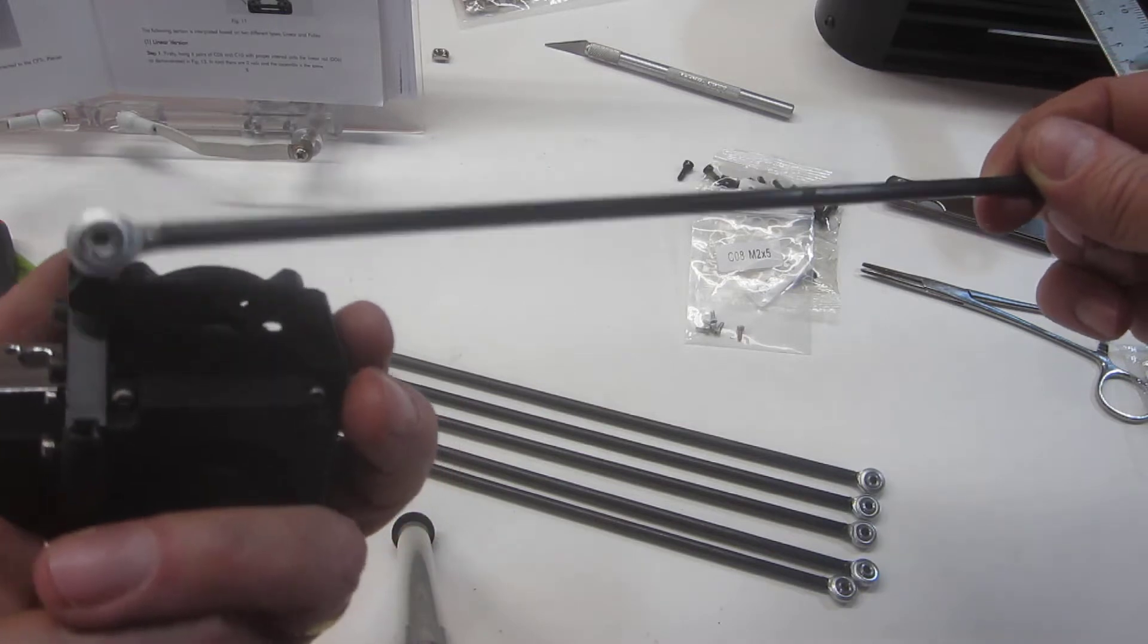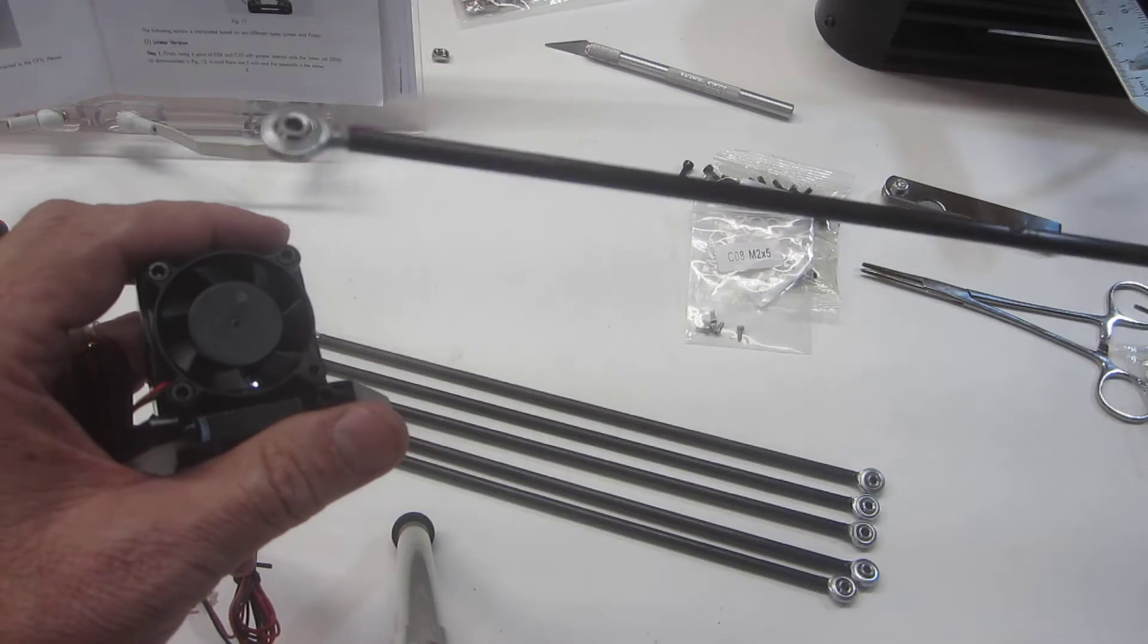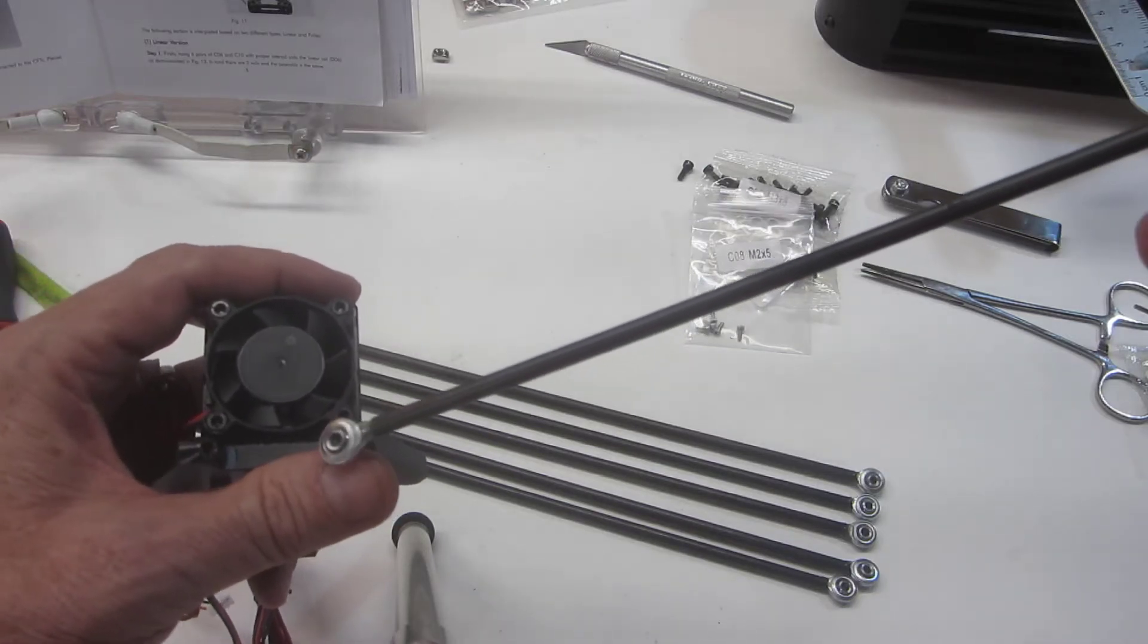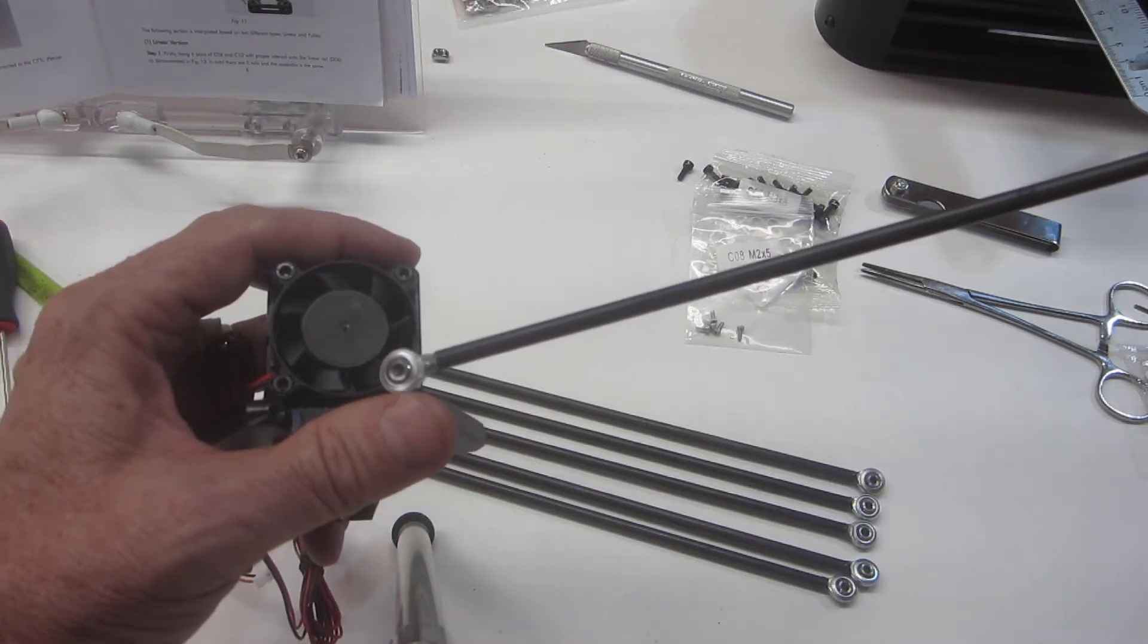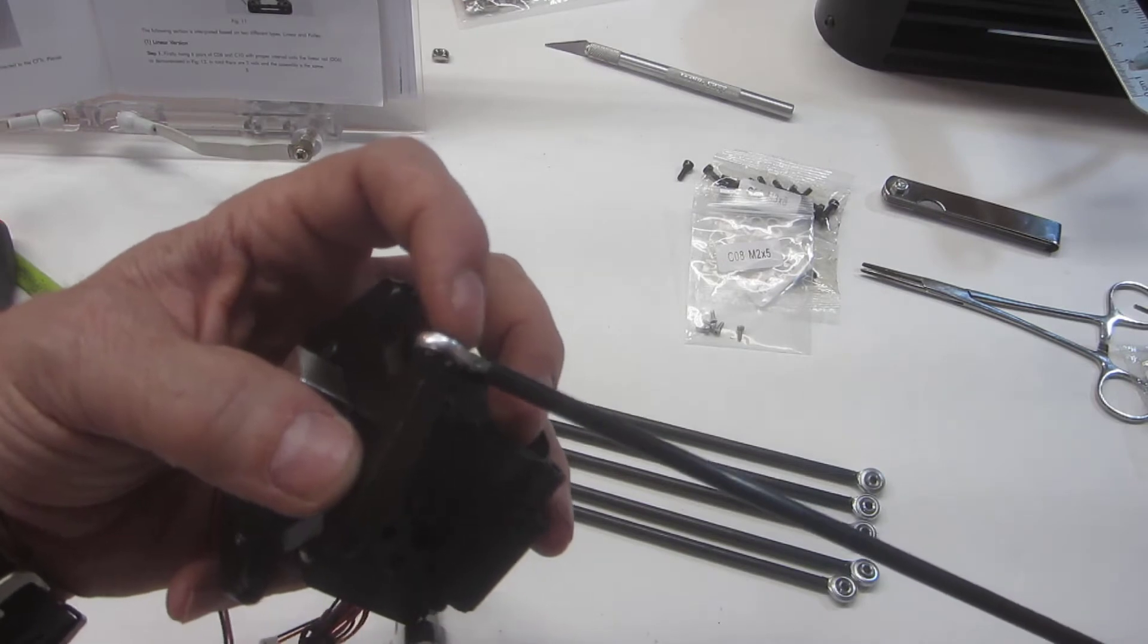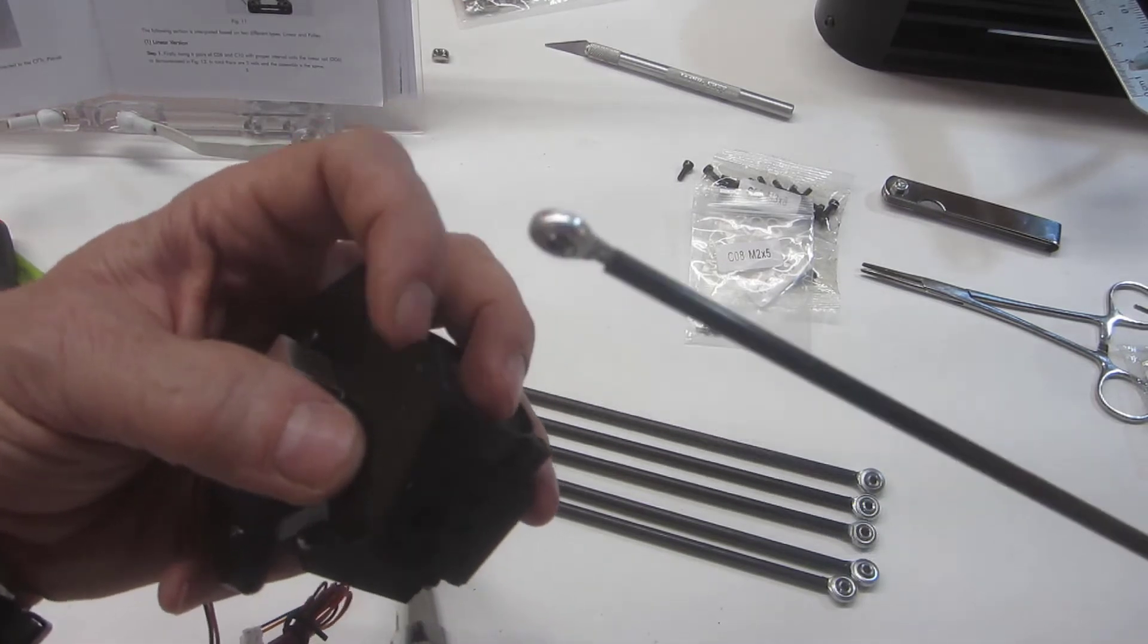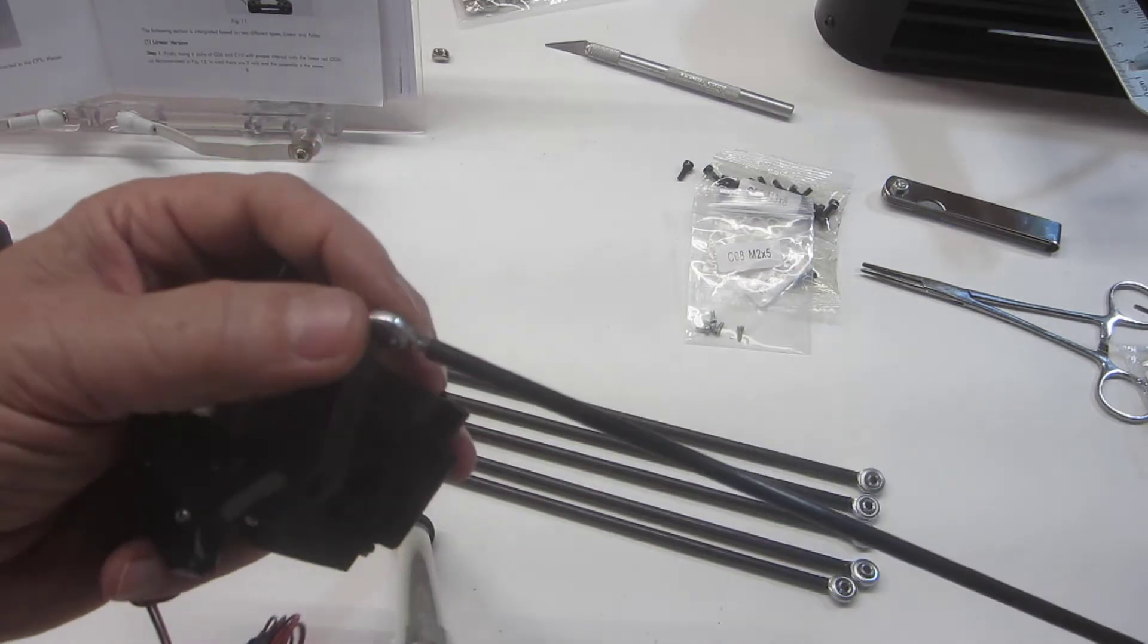This is the linear plus version, which means it has a little bit larger build area. In order to increase the size of the build area, they've actually had to extend the width of the effector right here.